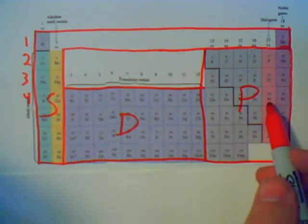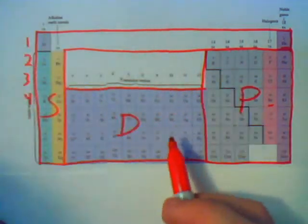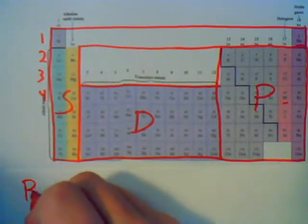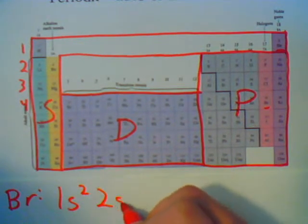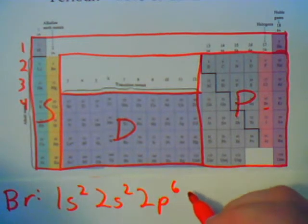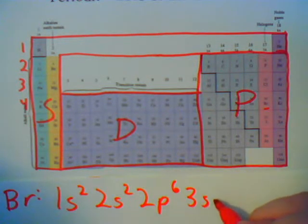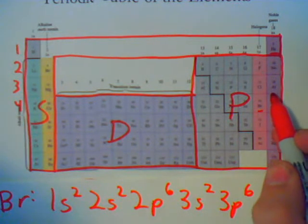So let's take bromine, starting from the upper left and working our way down, as we always did. So bromine, we have 1s2, 2s2, 2p6, 3s2, 3p6, and that takes us to argon.